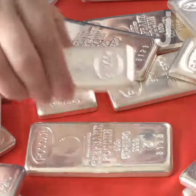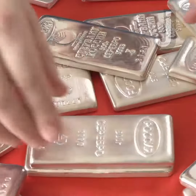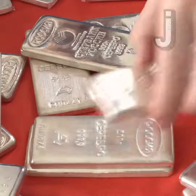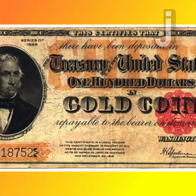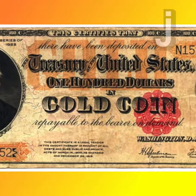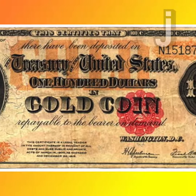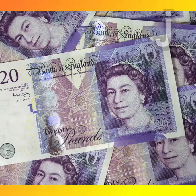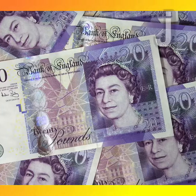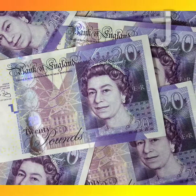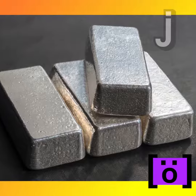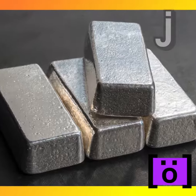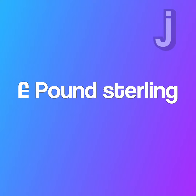Currency in the past was backed by a commodity like precious metals. The American dollar was backed by gold until 1971, and when the British pound was created in the 9th century, it was literally representative of a pound of sterling silver — hence its full official name being the pound sterling.